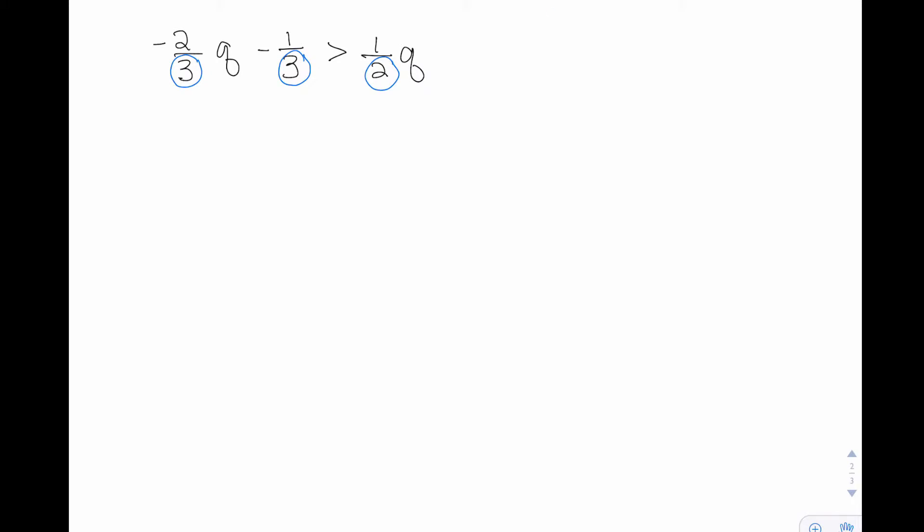We've got denominators of three and two, and the least common denominator is six. When I multiply by six, I have to make sure to multiply every term in this inequality by six.